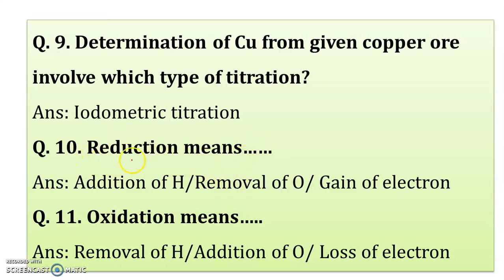What is the meaning of reduction? Reduction means addition of hydrogen, or removal of oxygen, or gain of electron — it is called reduction. What is oxidation? Oxidation is exactly the opposite of reduction — that is removal of hydrogen, addition of oxygen, or loss of electron. It is called oxidation.